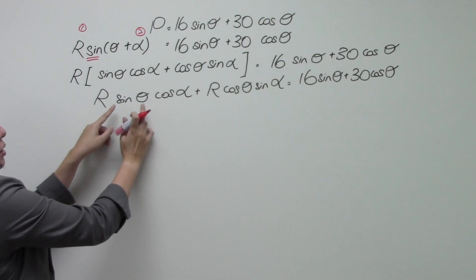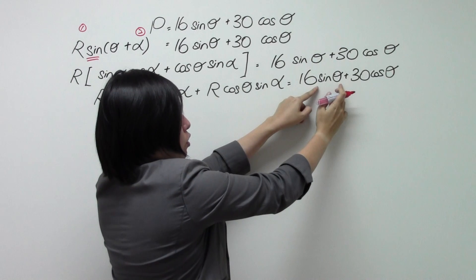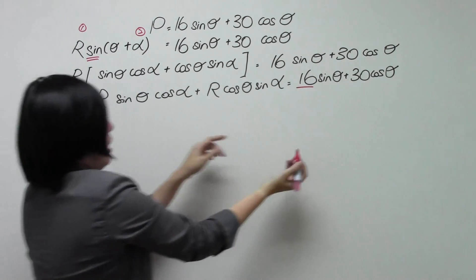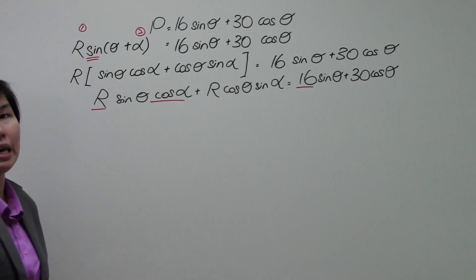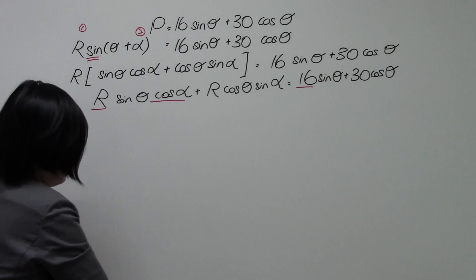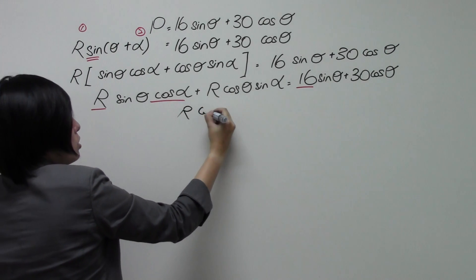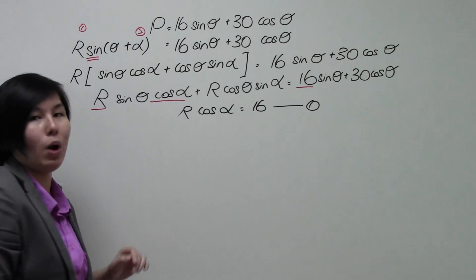Now, notice something? This is your sine theta. You have a sine theta over here. The coefficient of your sine is 16. And if you look back here, what's remaining? Your R cosine alpha. So what does it mean? It means that you can form your first equation. R cosine alpha is equal to 16. Equation number 1.